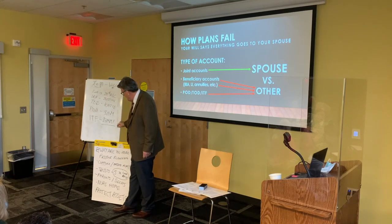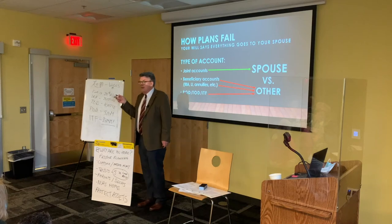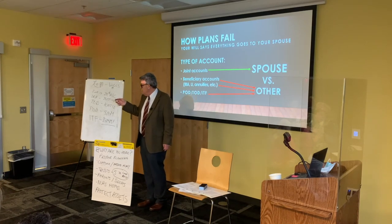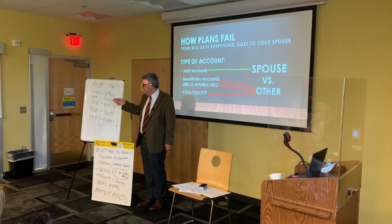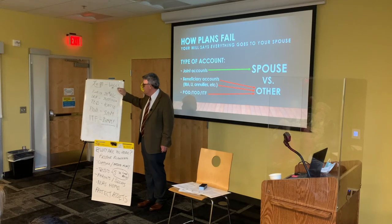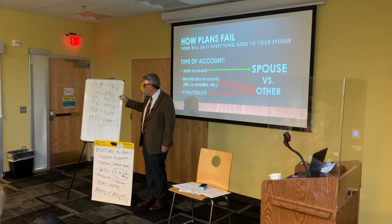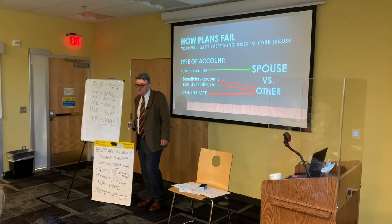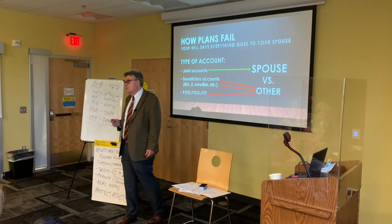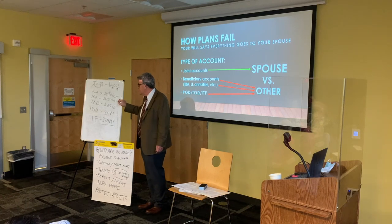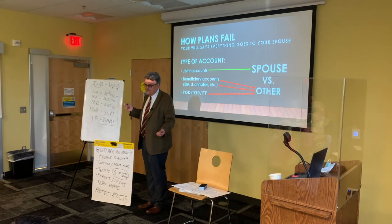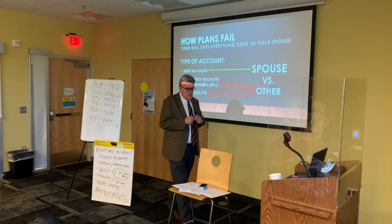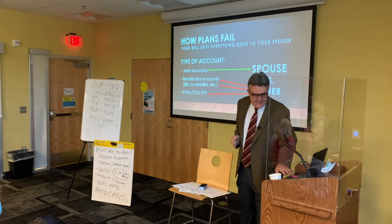All poor Agnes gets is the joint checking account. All the real money — in the IRA and these other assets — goes to the other beneficiaries. Why? Because the beneficiary designations on these accounts override the will, and a lot of people don't realize that, or they forget. John filled out those IRA forms 30 years ago when he started with the company, put Justin down, thought he'd change it later — never did. I see this every day.